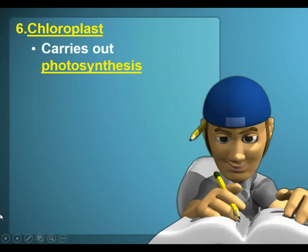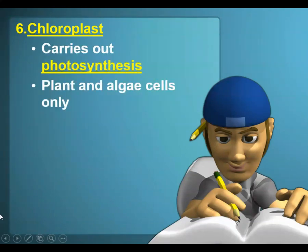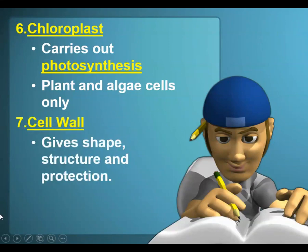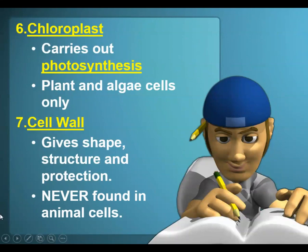Chloroplasts carry out photosynthesis and are only found in plant cells and algae. Then we have the cell wall, which is only in plant cells and some bacteria. It gives shape, structure, and protection to plant cells, and we'll never see it in an animal cell.